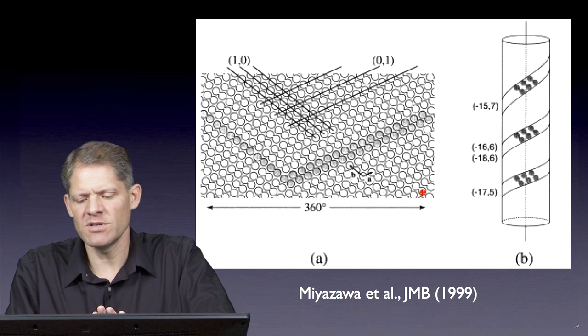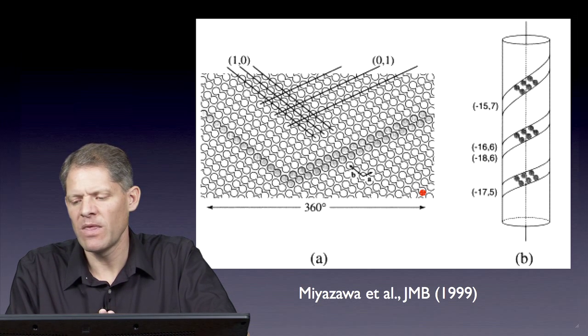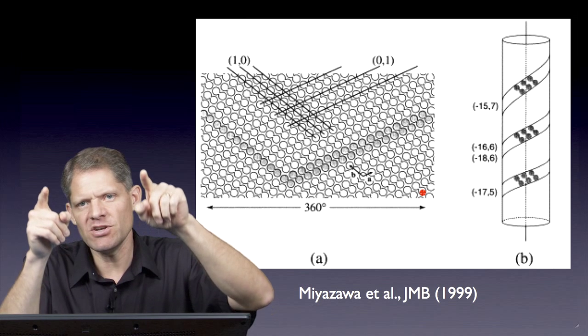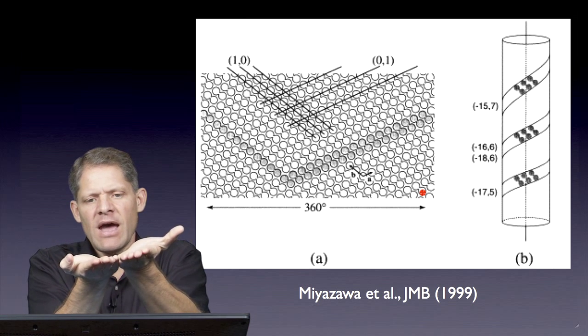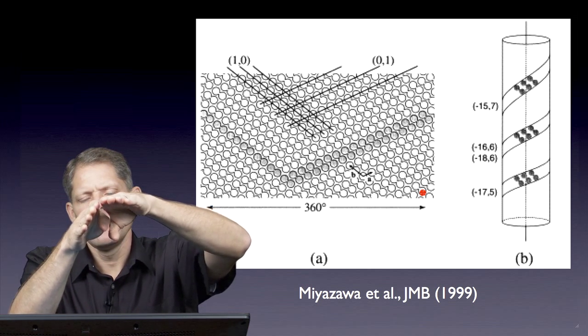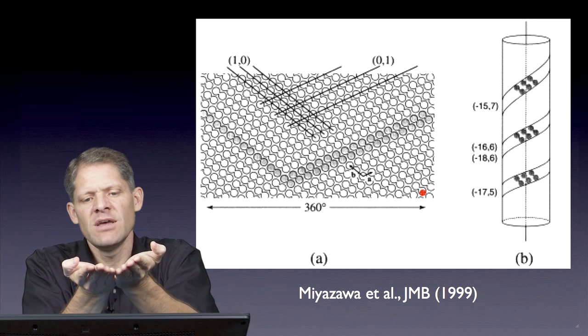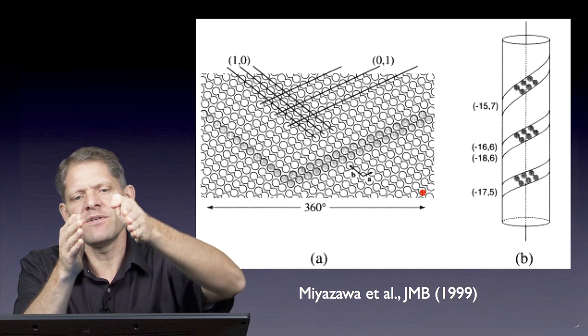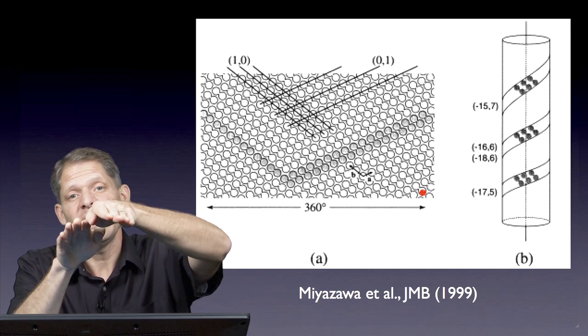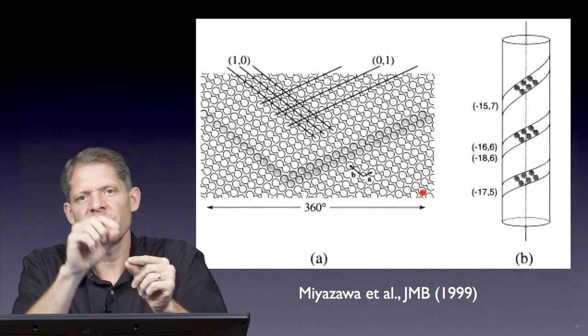Now, it turns out, if you consider an array like this, depending on how you cut the edges at what angle and how you roll it up, the same two-dimensional lattice can actually wrap up into different families of helical tubes with different pitches.